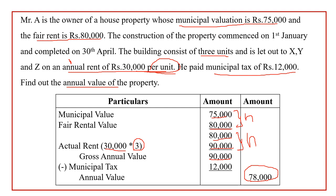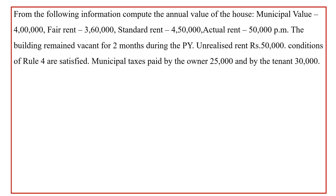I will explain with another problem. From the following information, compute the annual value of the house. Municipal value, fair rent, standard rent, and actual rent are all given. The building remained vacant for 2 months during the previous year. Unrealized rent is 50,000. Conditions of Rule 4 are satisfied. Municipal tax paid: by owner 25,000, by tenant 30,000. This problem is an example of calculating annual value when there is both vacancy and unrealized rent.